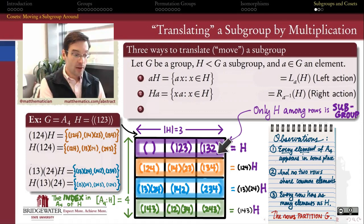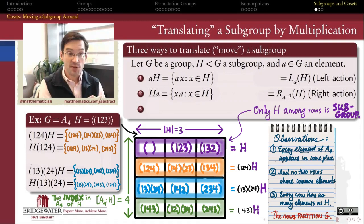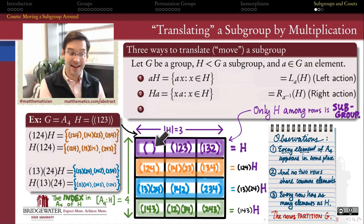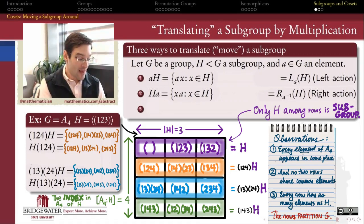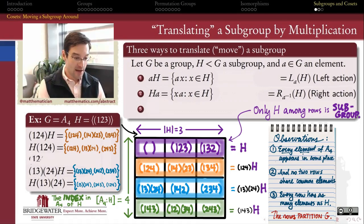Every coset has exactly as many elements as the subgroup of which it is a coset. Those observations — that rows all have the same number of elements and that they partition the group — are the key to proving Lagrange's theorem. The only row here that is a subgroup of G is the original subgroup H. Remember that cosets are almost never subgroups — they're only subgroups if they happen to contain the identity element. Since that identity element can only appear in one spot on this chart, only the first row H is a subgroup. All other cosets are not subgroups; we can think of them as translated subgroups — copies of a subgroup moved to a different spot inside the parent group.